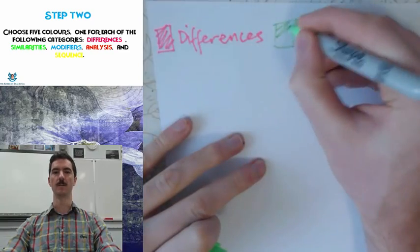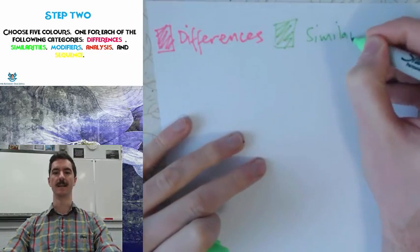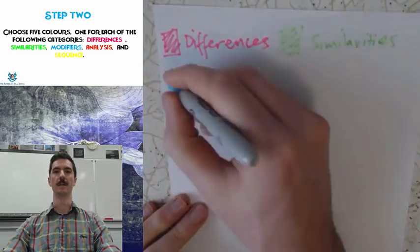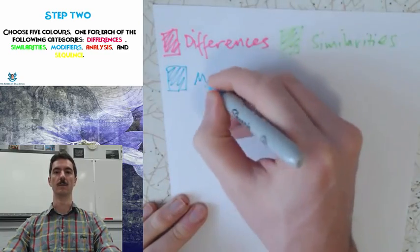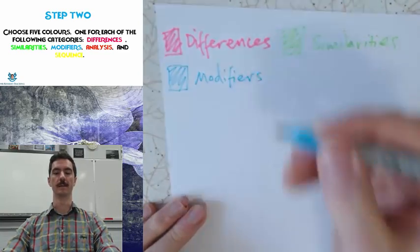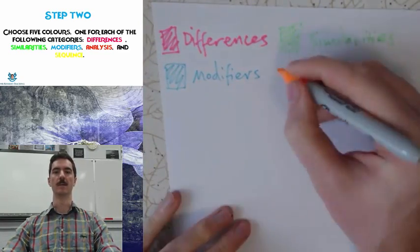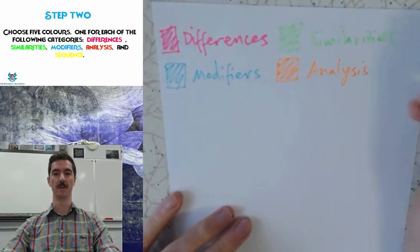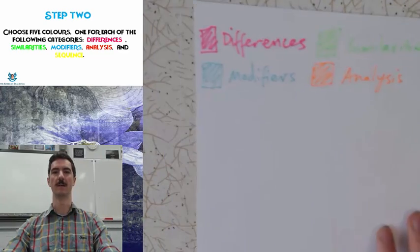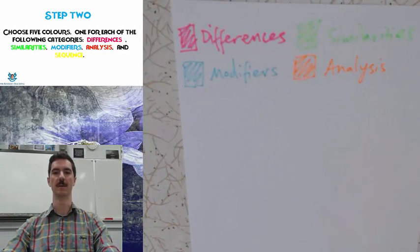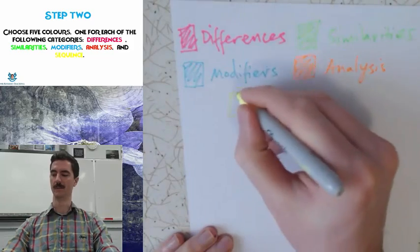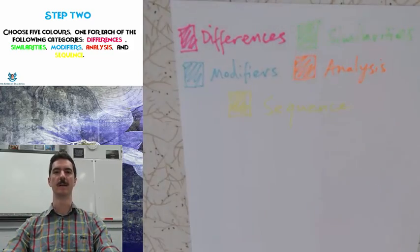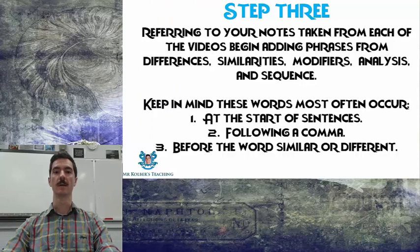The five categories are: differences, similarities, modifiers, analysis, and sequence. Each of these relates to the video you should have already watched, and you should understand each of these concepts. For my example piece, I've picked pink for differences, green for similarities, blue for modifiers, pinky-orange for analysis, and yellow for sequence.